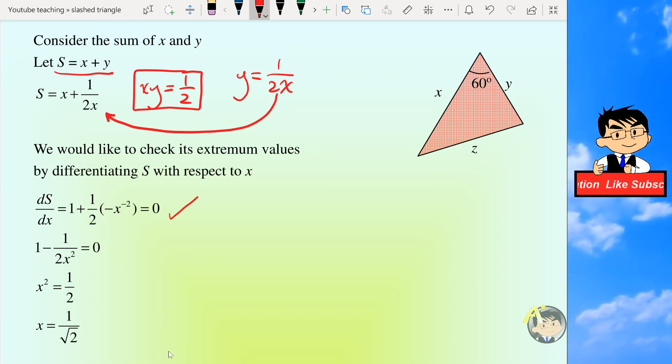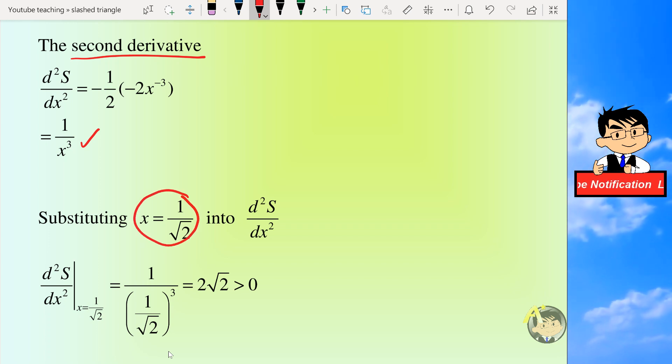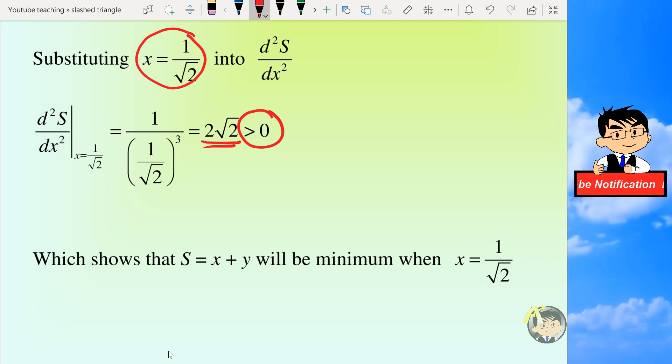After some calculation, we can get x which is 1 over root 2. And then we differentiate the function s again to get the second derivative, which is 1 over x cubed. And by substituting x equals 1 over root 2 into the second derivative, we can get the value of it to be 2 root 2, which is greater than 0. So this result shows that x plus y will be minimum when x equals 1 over root 2.